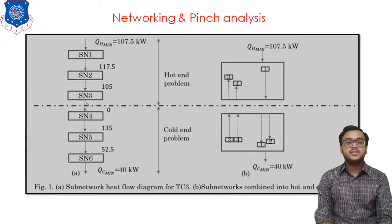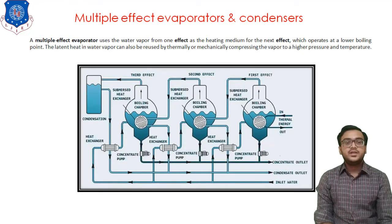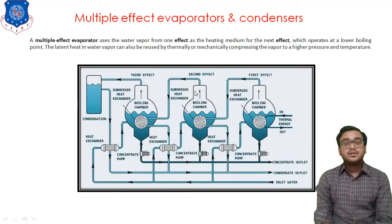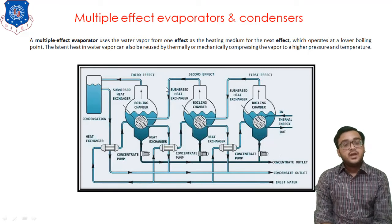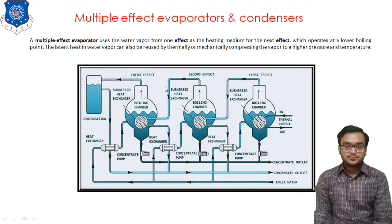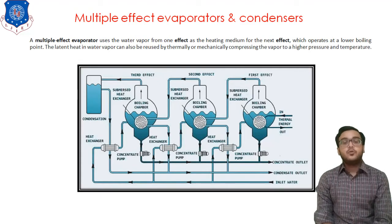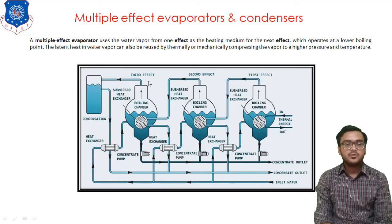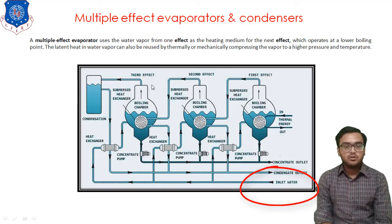Now let me start the next topic: multiple effect evaporators and condensers. Multiple effect evaporators are a type of evaporator in which we use the energy of vapor for the creation of different products. In the diagram, you can see three evaporators: first, second, and third. Water is supplied from the bottom to all three evaporators.